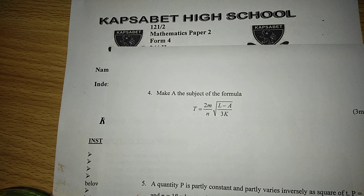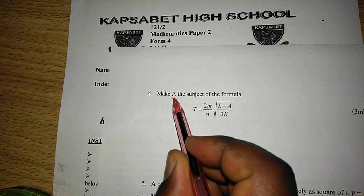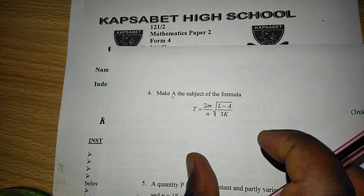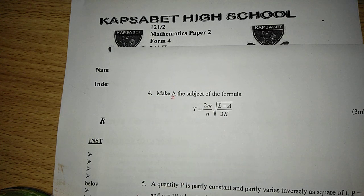Therefore, to go about this one, we know that when we are making something the subject of a given formula, we operate the variables such that we come to remain with the intended subject on one side of the equation.